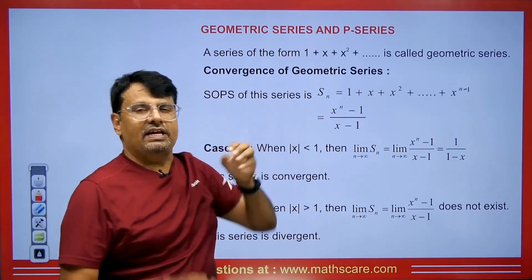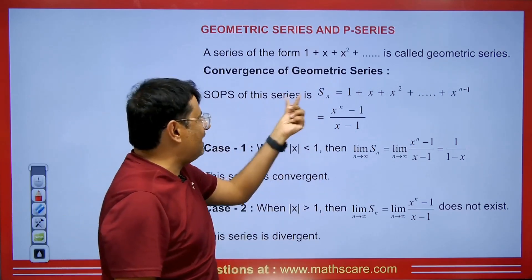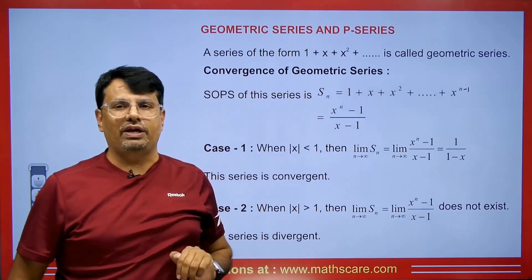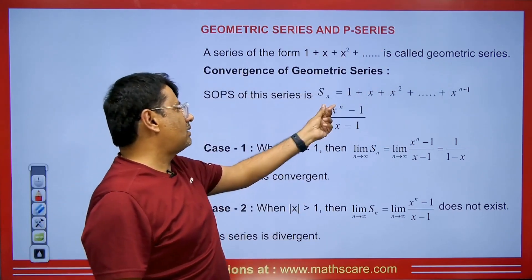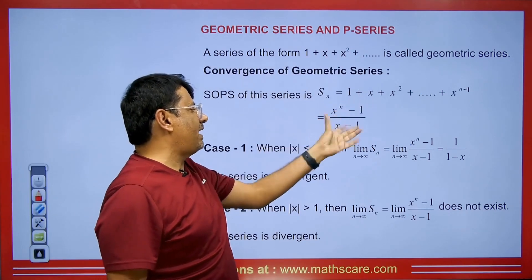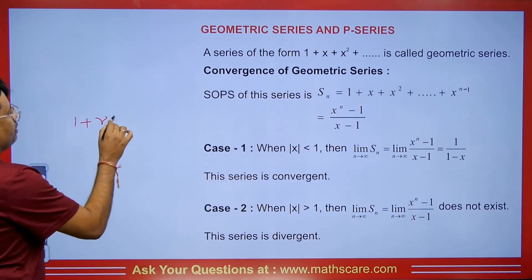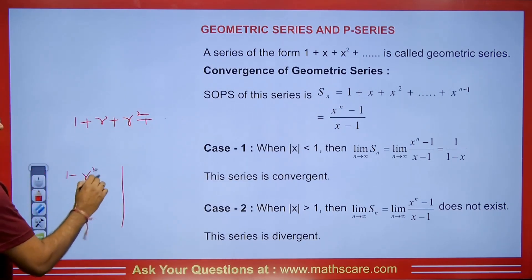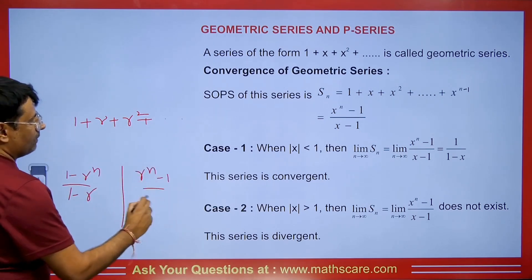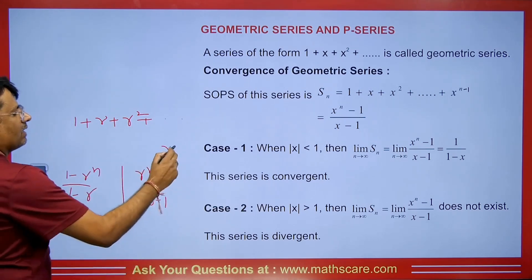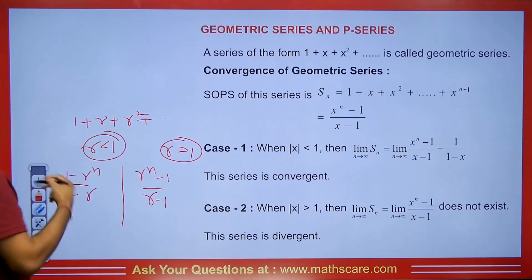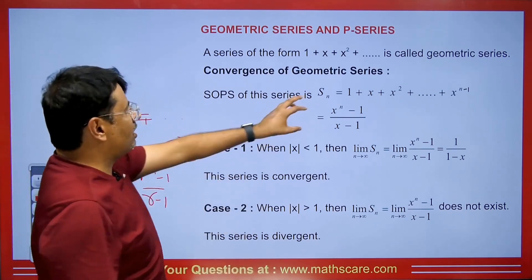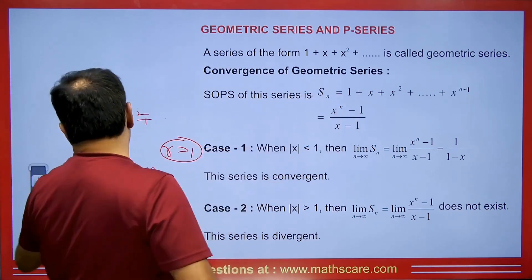This is our Infinite Series. If we find its partial sums, then SN will be 1 plus x plus x squared up to x to the power n minus 1. The formula for its sum is x to the power n minus 1 upon x minus 1. There are two formulas: one is 1 minus r to the power n upon 1 minus r, and the other is r to the power n minus 1 upon r minus 1, depending on whether r is greater or less than 1. We will apply these as per the value of x.